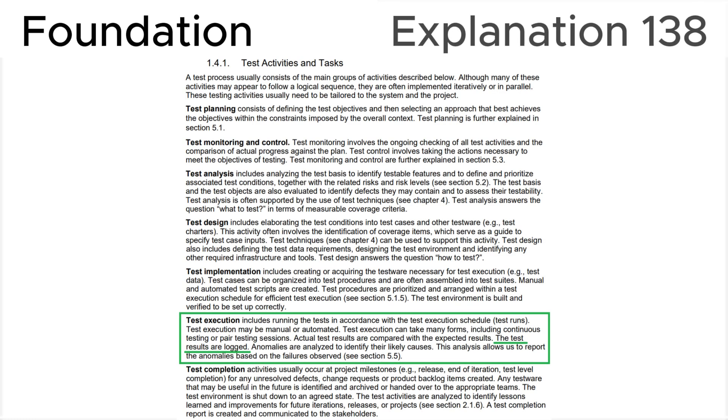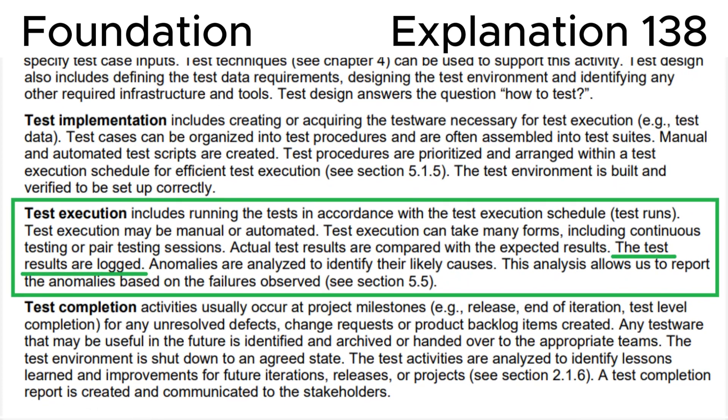Explanation: At last, let's look at the section 1.4.1 Test Activities and Tasks in the ISTQB syllabus, where we can see that test execution includes running the tests in accordance with the test execution schedule. Test runs may be manual or automated. Test execution can take many forms including continuous testing or testing sessions. Actual test results are compared with the expected results. The test results are logged. Anomalies are analyzed to identify their likely causes. This analysis allows us to report the anomalies based on the failures observed.